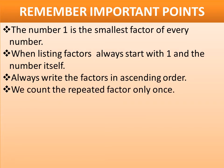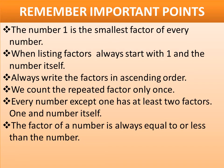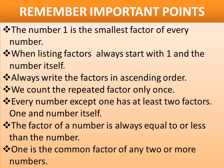Point 9: We count the repeated factors only once. Point 10: Every number except 1 has at least 2 factors — 1 and the number itself. Point 11: The factor of a number is always equal to or less than the number. Point 12: 1 is the common factor of any 2 or more numbers.